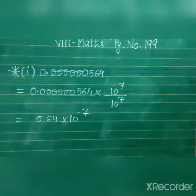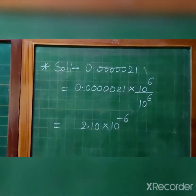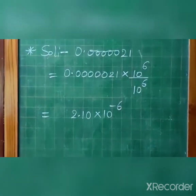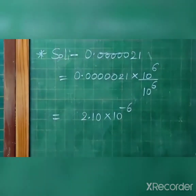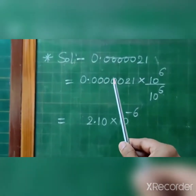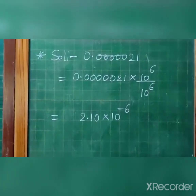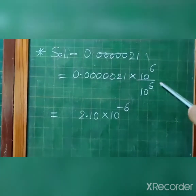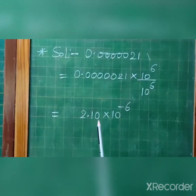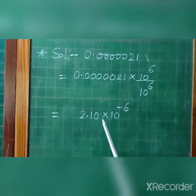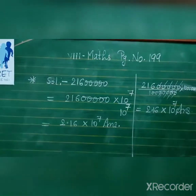Now see the next example. After the first digit we want a decimal on the right-hand side. Counting: one, two, three, four, five, six — so we multiply by 10 to the power 6 and also divide by 10 to the power 6. In standard form, after the decimal two digits should be there; if only one digit is present, we can put a zero. So the answer is in the form of 10 to the power minus 6.